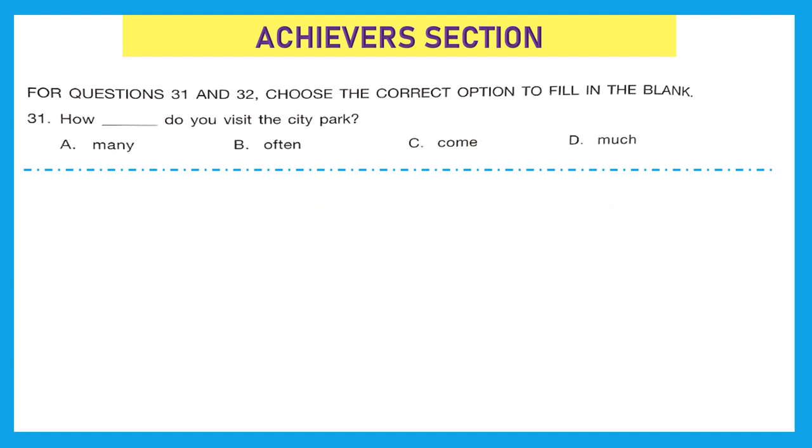Moving to our last section, the achiever section. It holds double marks, so please be very alert or cautious while answering all these questions. For questions 31 and 32, choose the correct option to fill in the blank. Question 31, how dash do you visit the city park? Here they are asking about the frequency. The right option should be option B, often. How often do you visit the city park?